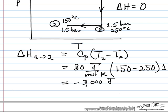The total change then for going from 1 to 2 is going to be 0 for the first step, and then minus 3000 joules for the second, which means the total change is minus 3000 joules.